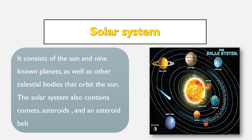The asteroid belt is located between Mars and Jupiter. If you look at Jupiter, you can see how huge it is. Between Mars and Jupiter we find the asteroid belt, which takes the shape of a belt.